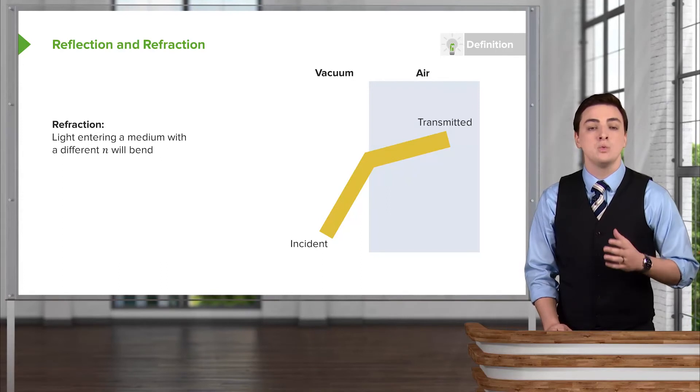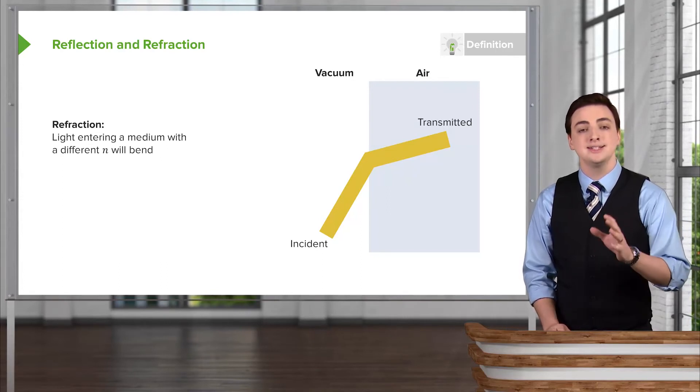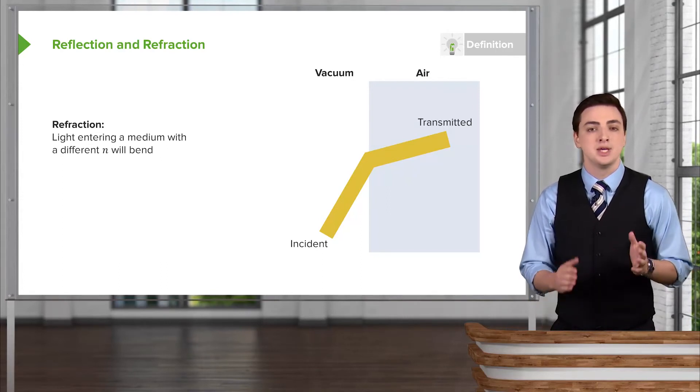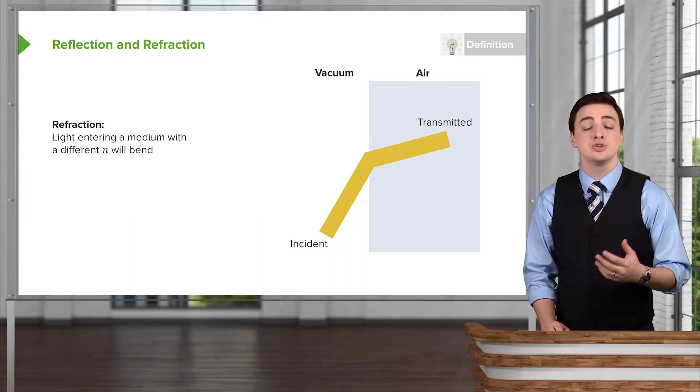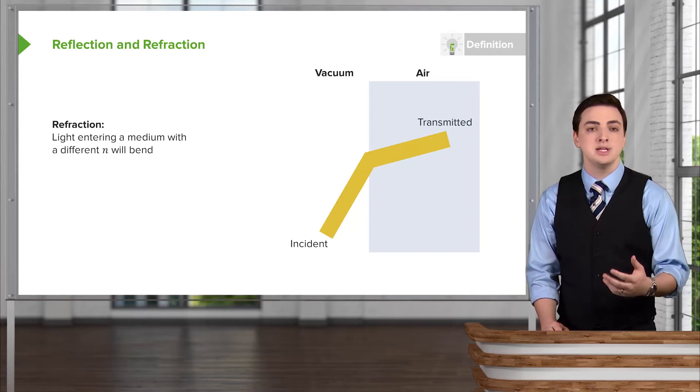hits this new medium, it will bend. We talk about the amount of light that goes into the new medium as the transmitted amount of light. This bending effect is part of what the light does,